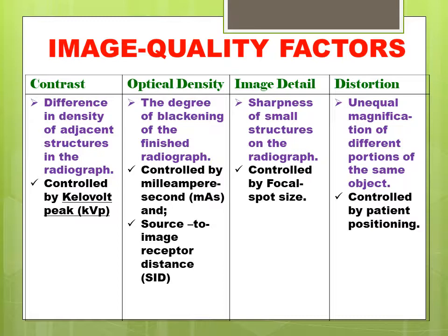Next is image detail — the sharpness of small structures on the radiograph, controlled by focal spot size. Next is distortion — unequal magnification of different portions of the same object, controlled by patient positioning.